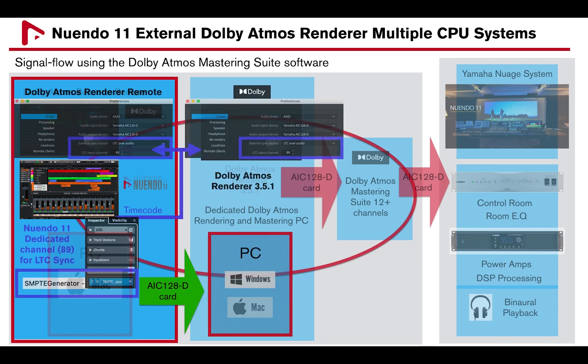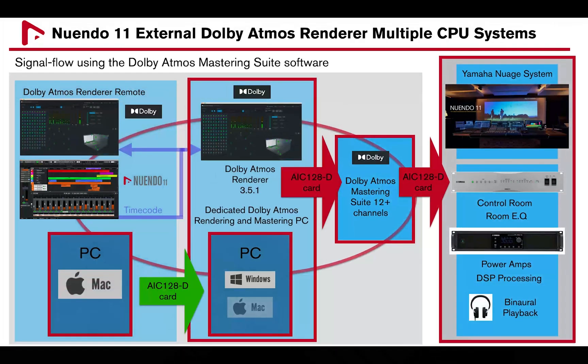To synchronize via LTC new Windows 11 with both Dolby Atmos Renderer Remote and Renderer 3.5.1, a dedicated channel — in this example channel 89 — is needed using the Steinberg Sempty Generator plugin. From the Dolby Atmos Renderer, the signal can be processed through a DSP processor and power amplifiers to fine tune your speaker configuration in a monitoring room.